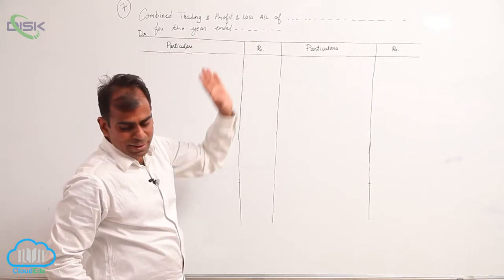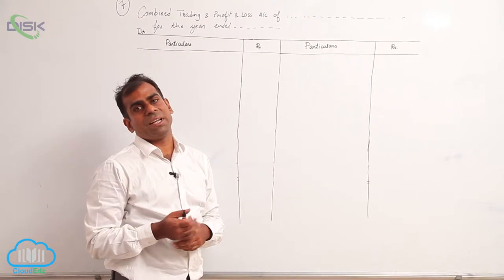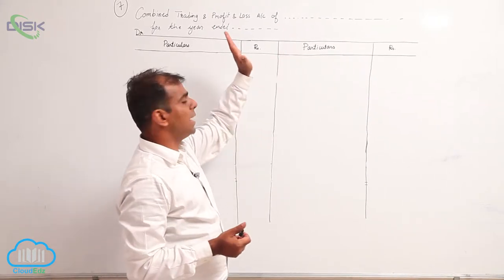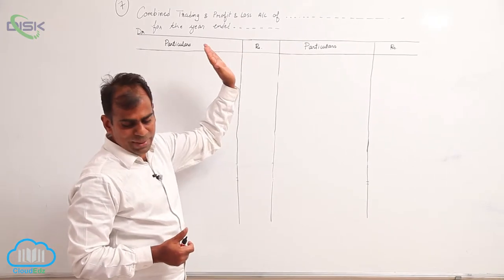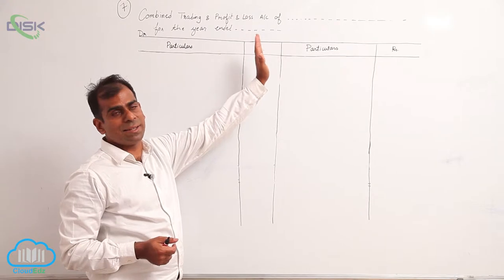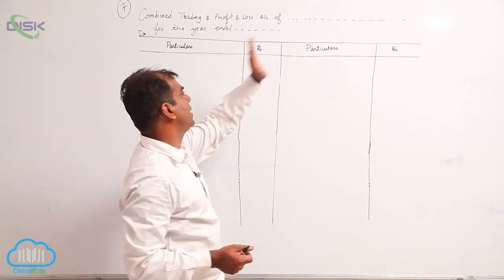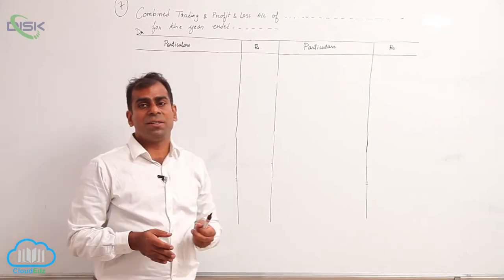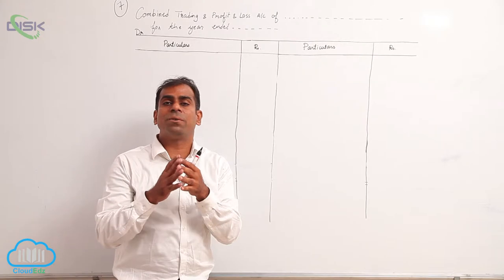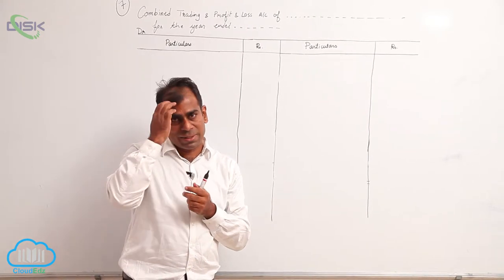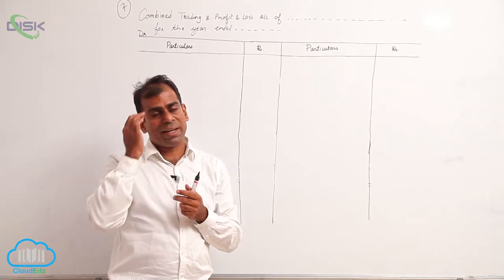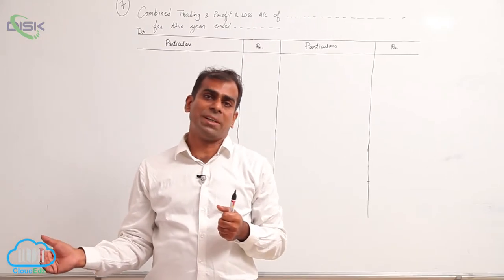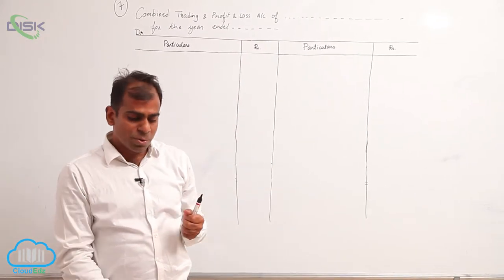Since there is no mention of any person's name here, I am going to ignore that, and similarly no year or date is given, so I am going to ignore that as well. Then, based on the information, first you have to separate the items related to the trading account and the items related to the profit and loss account.